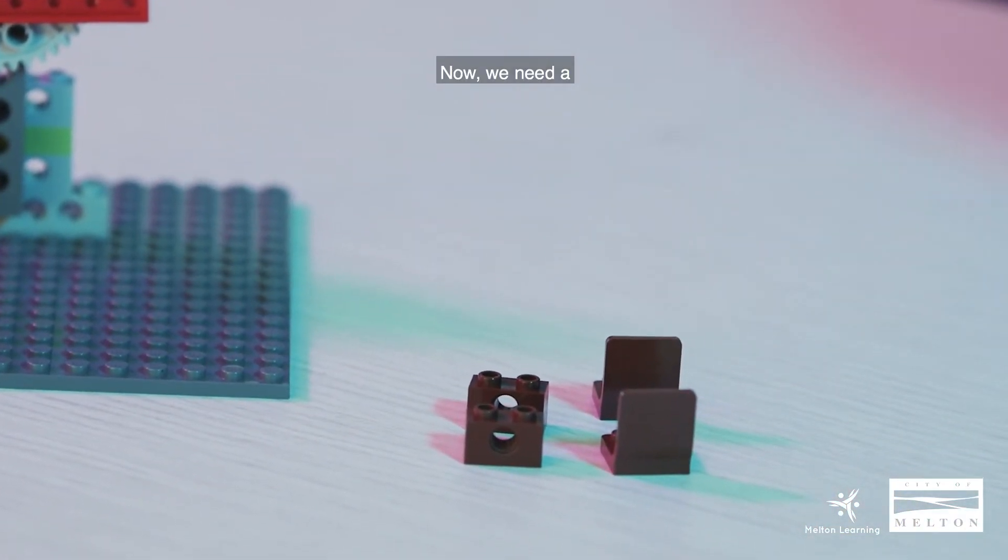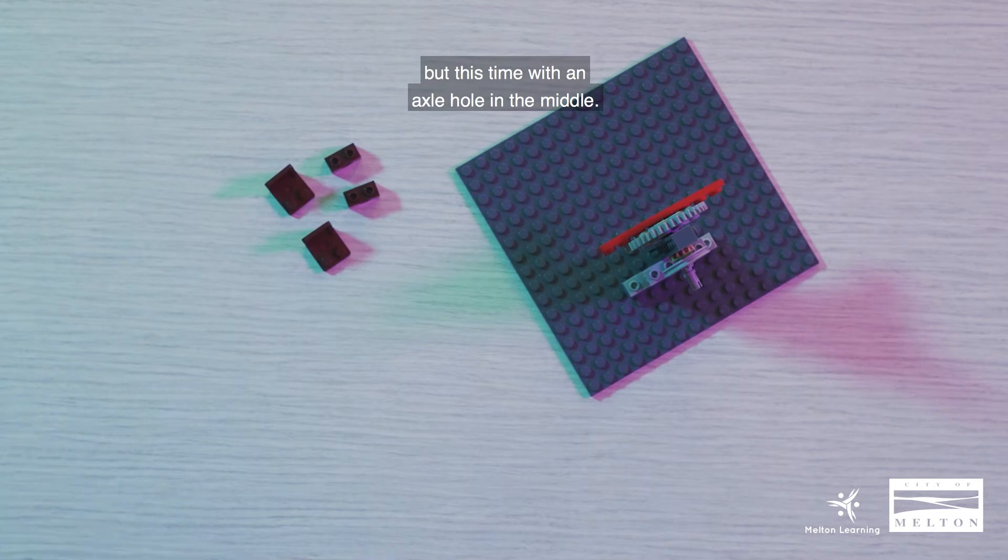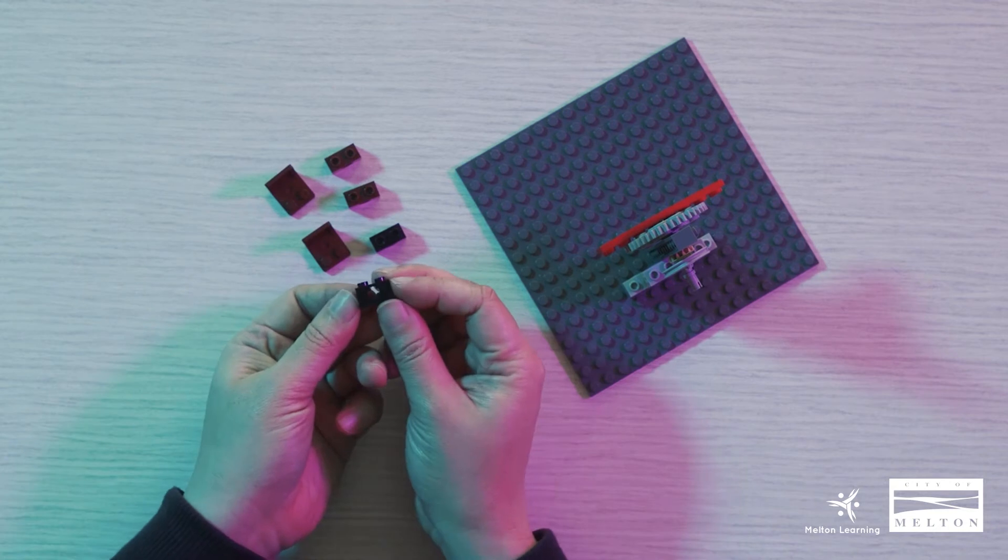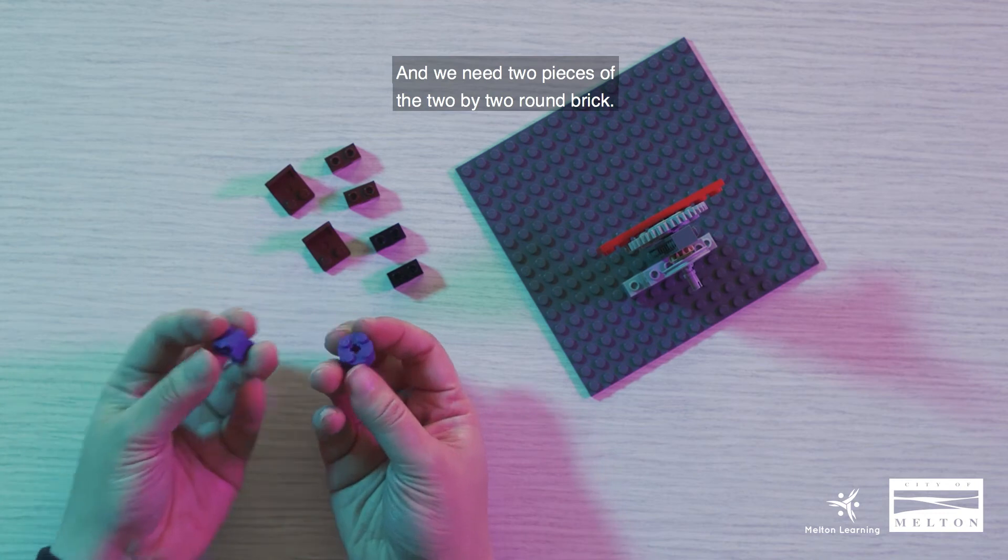Now we need a tech brick one by two, but this time with an axle hole in the middle. And we need two pieces of the two by two round brick. Looks like this in the bottom.